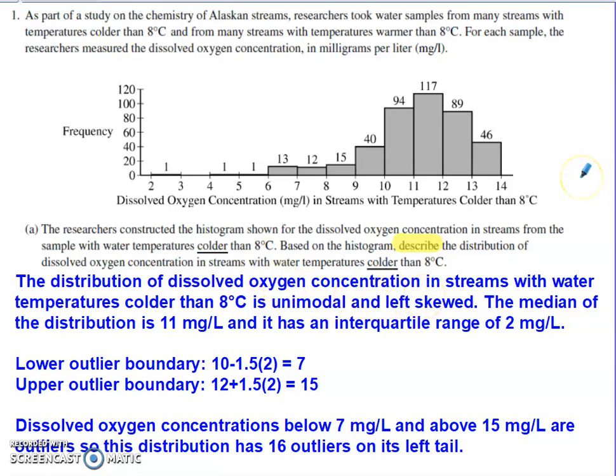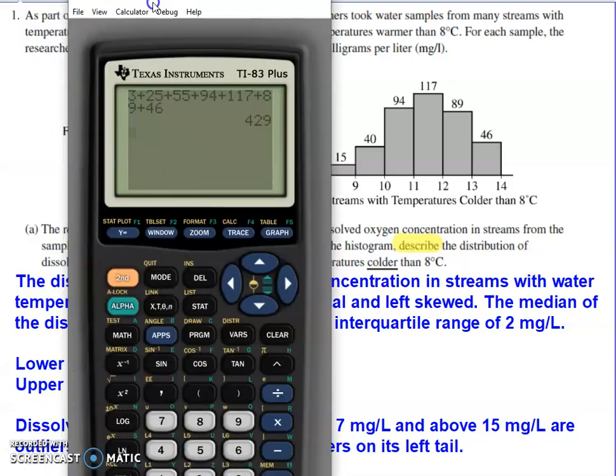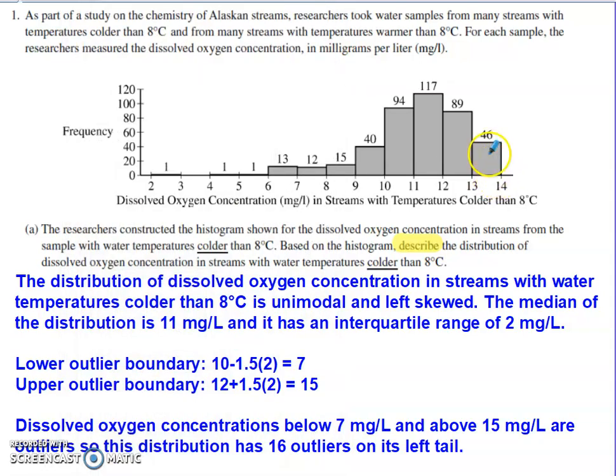For center, I went and found the median. I just totaled up 46, 89, 117—how many streams are represented within this data set? There were 429. If you divide that by two, you end up with the 214th, 215th data point sharing the middle spot. I counted in 46, 89, and my 214th and 215th are going to be elements of this bar of the histogram right here. So I know that my median is at 11, and I attached units there. You always want to make sure that you do this description in context. Little things like including units can definitely be a big help as far as scoring goes.